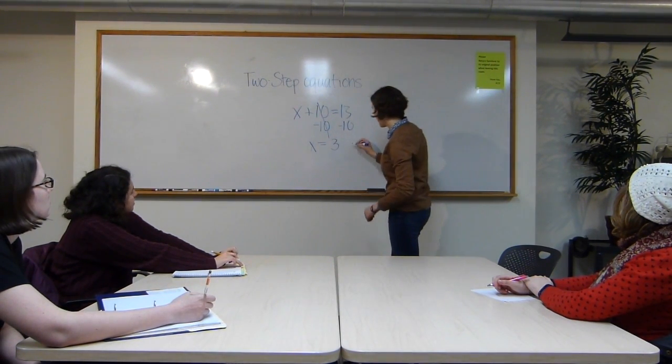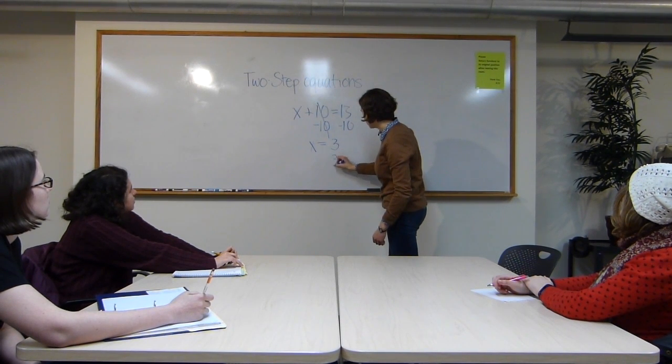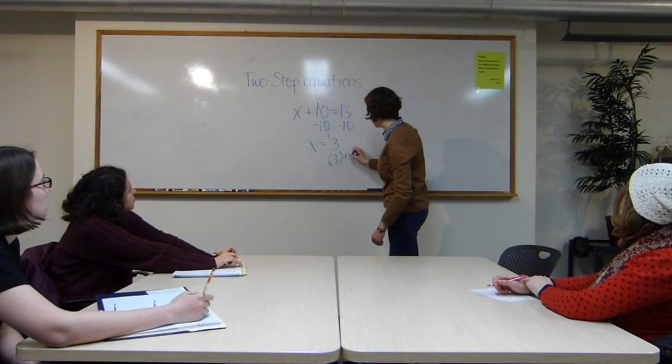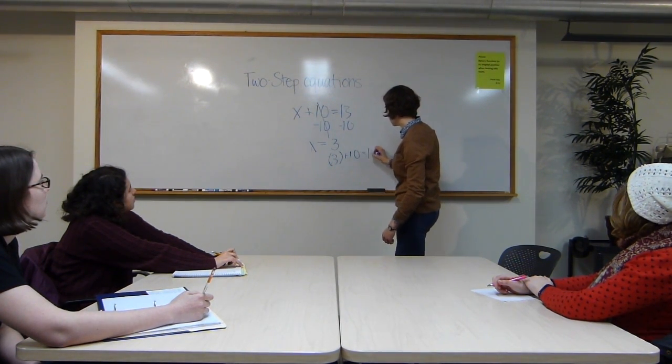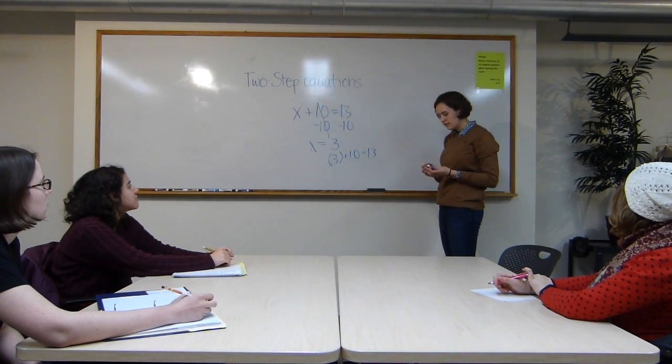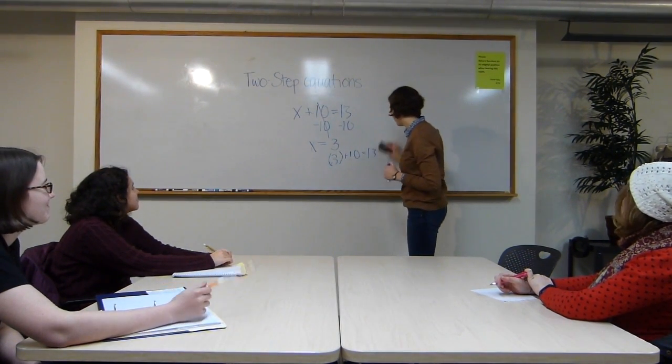And we can check this right away and plug back into the original equation. So 3 plus 10 is equal to 13. Are there any questions on this first part? Okay.